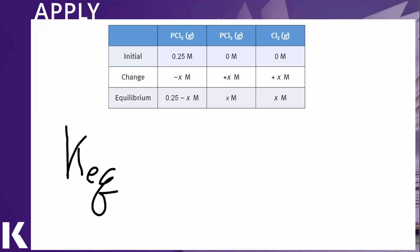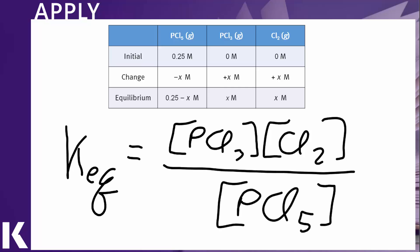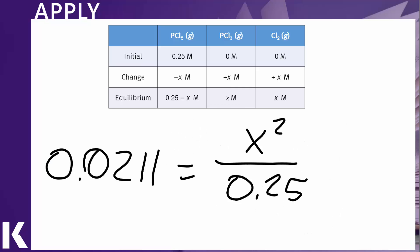So to use our technique then, let's write the equilibrium expression here, which is concentration of products multiplied together divided by concentration of reactant. Then filling in from our ICE table, it looks a bit like this.